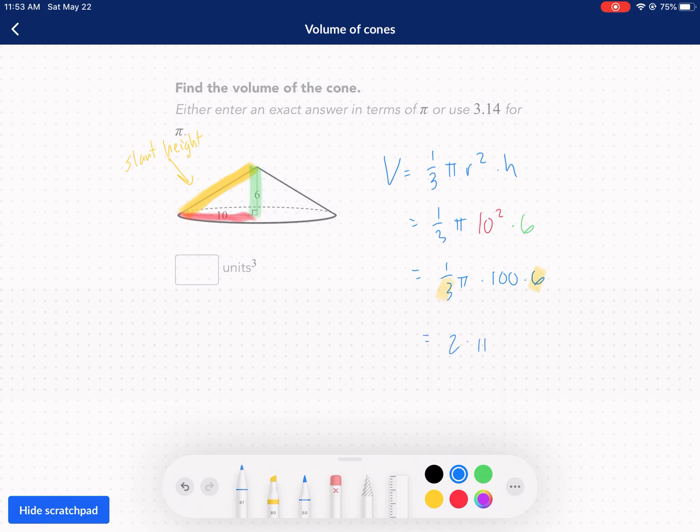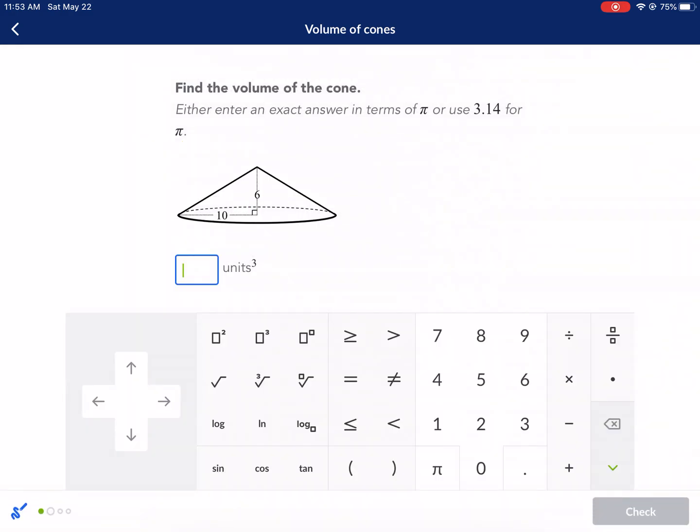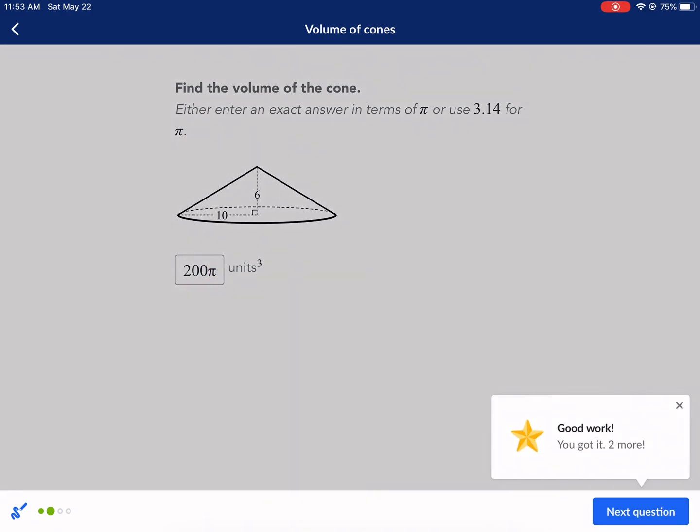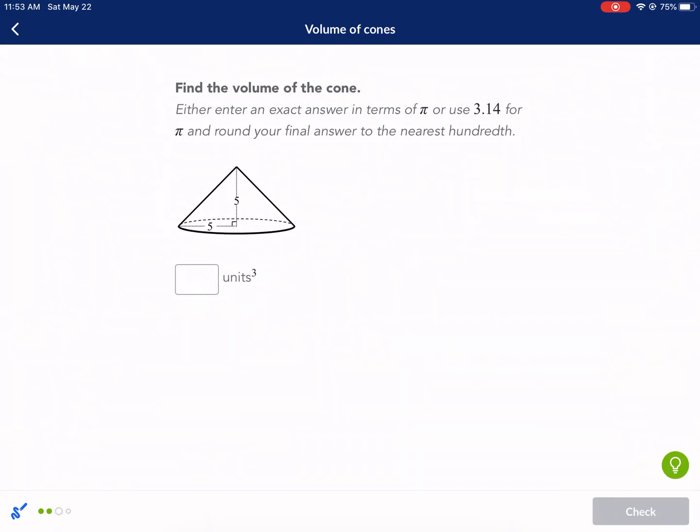And you get 2 times pi times 100. We get 200 pi as our answer. And that's what I'm going to punch in. There. I turned up the volume. I don't know if you noticed I did that.